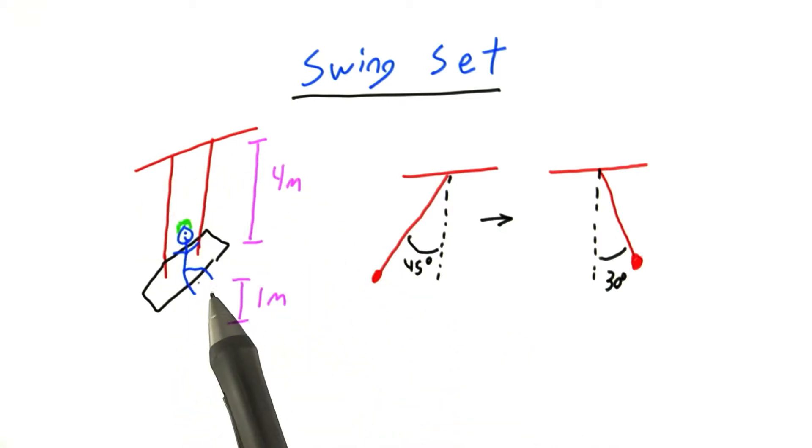Now it turns out we can view the movement of you on the swing moving back and forth as being the same as the movement of a pendulum back and forth.